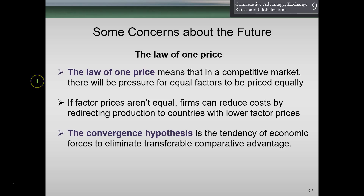The law of one price means that in a competitive market, there will be pressure for equal factors to be priced equally, and firms can reduce costs by moving production to countries with lower factor costs. Once the transferable comparative advantage gap closes, the market would eliminate it. Whether that happens through lesser countries' wages rising or U.S. wages coming down — probably some of both — we don't know. It could take a long time or happen faster than we think, but all else equal, countries could get better at these things, and the transferable comparative advantage would then lessen.